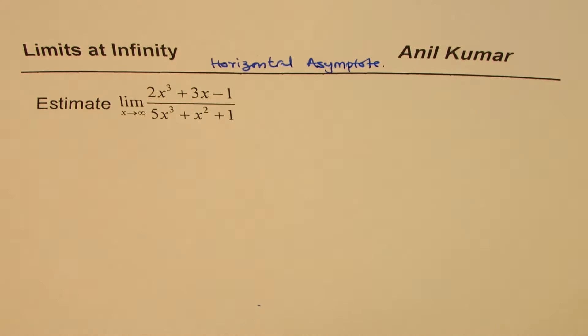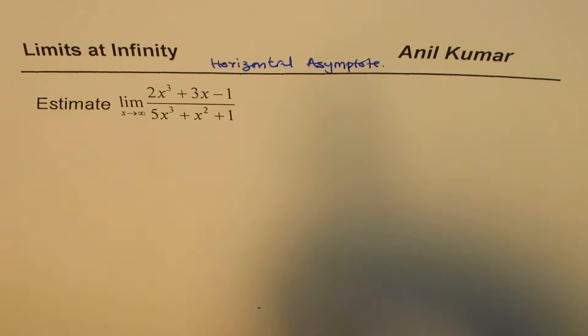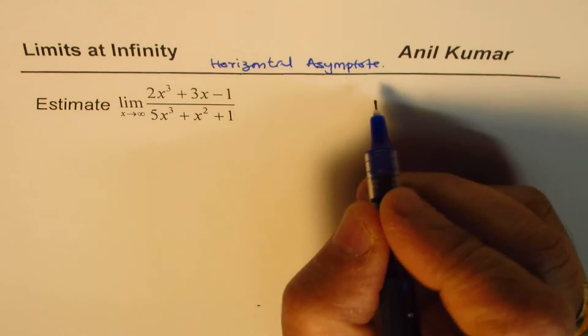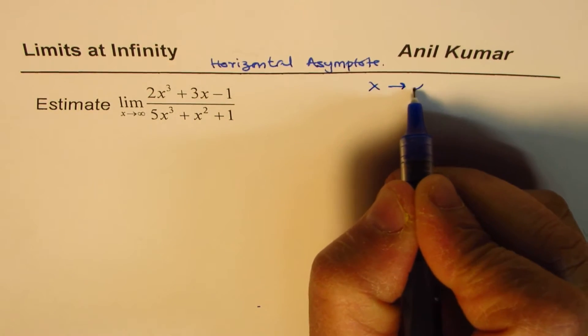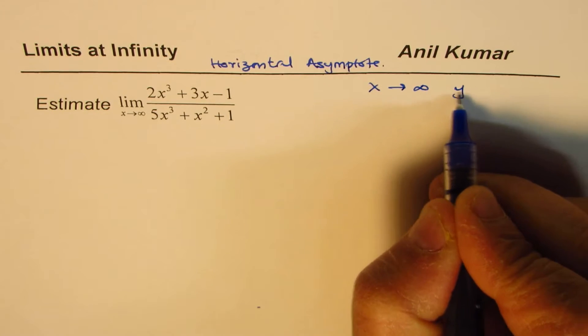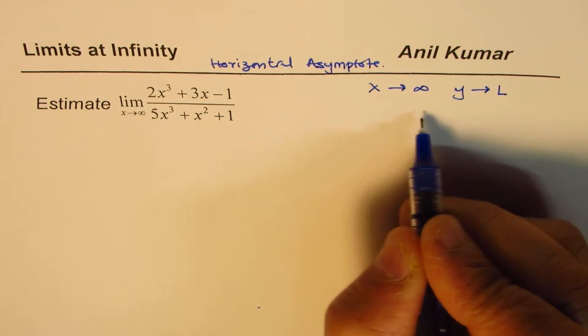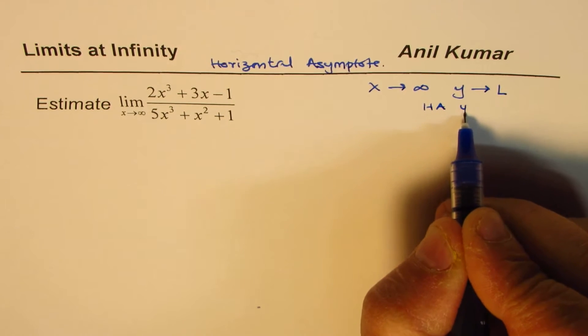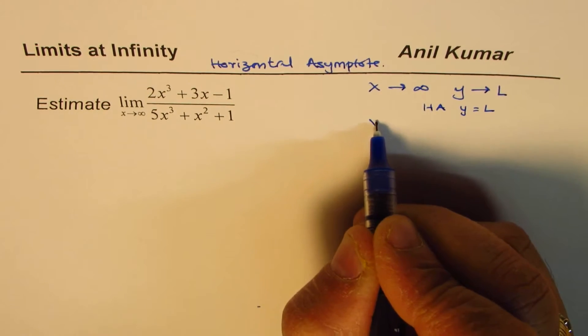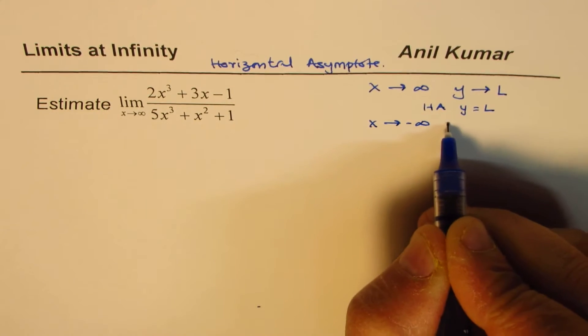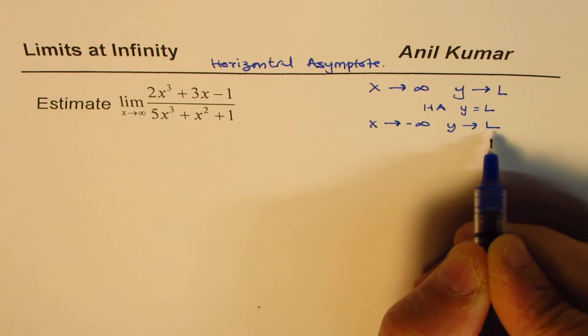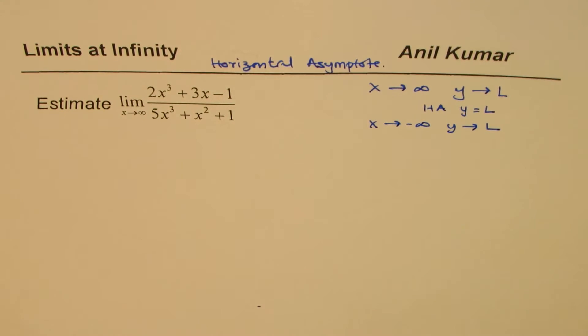We have taken questions with limits at infinity. Horizontal asymptote is when x approaches a large value, say positive infinity, and if y approaches some fixed value, then there is a horizontal asymptote y equals L. Similarly, if x approaches negative infinity and y approaches a fixed value, we have a horizontal asymptote y equals L.